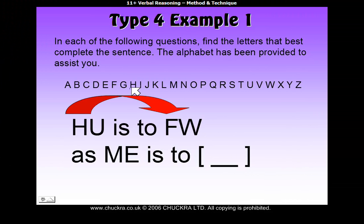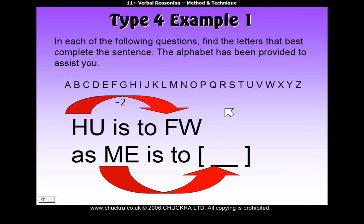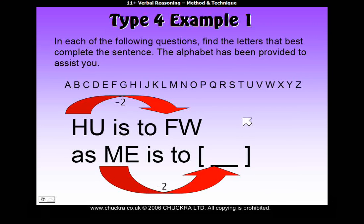Let's see. H, if you go backwards 2, gets to F. So we can put a little minus 2. Then you find out what this M would change to by going backwards 2. You do the exact same rule to the first letter of ME. So M backwards 2 is K. So the first letter of the answer should be K.